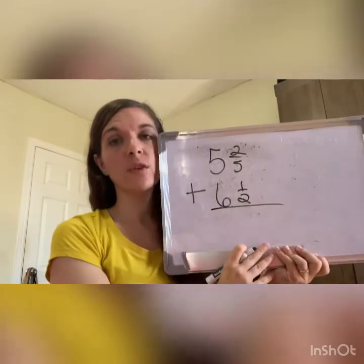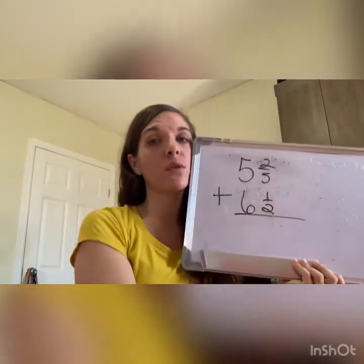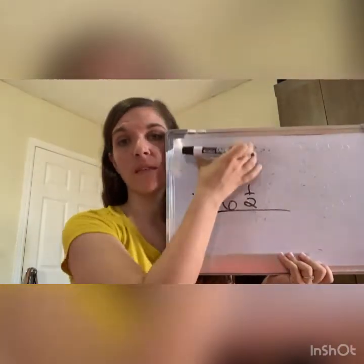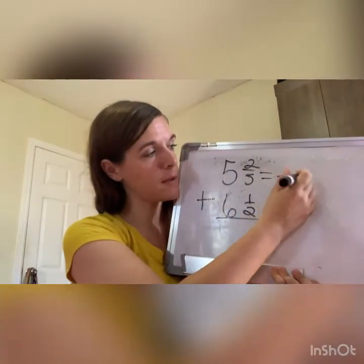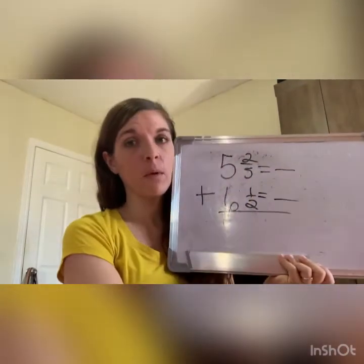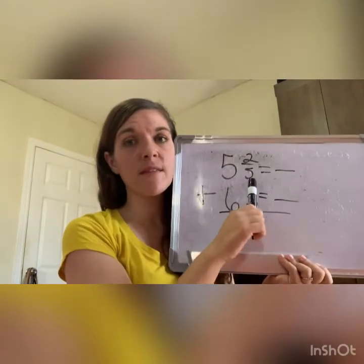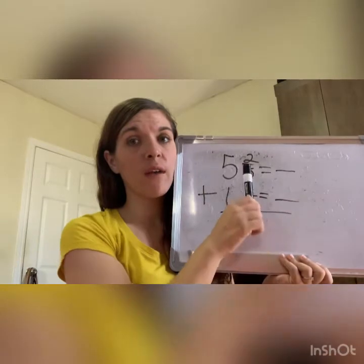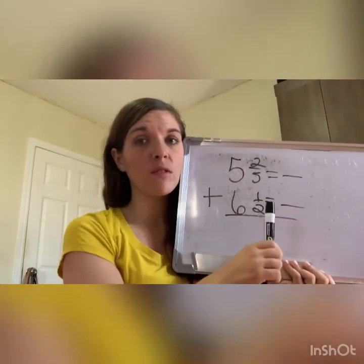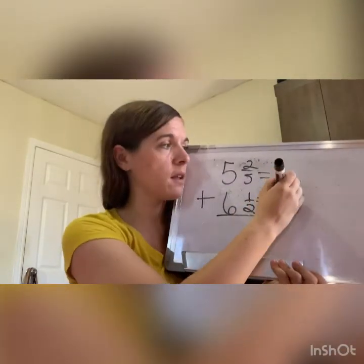You need to write it vertical, you need to put your common denominator. Remember what you do: 5 and 2/5 plus 6 and 1/2. 5 is the biggest one, can you do 5 divided by 2? No. So 5 times 2 is 10. Can you do 10 divided by 2? Yes. So 10 is your common denominator.